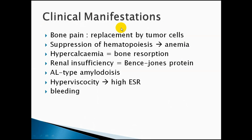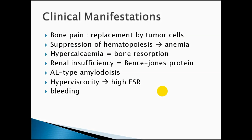The clinical manifestations of multiple myeloma include: bone pain from multifocal tumor lesions in the bone marrow, along with suppression of hematopoiesis due to tumor cell replacement, leading mainly to anemia and reduced red blood cell count. Hypercalcemia and increased fracture risk result from plasma cells activating osteoclast receptors, increasing bone resorption and releasing calcium into the blood.